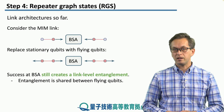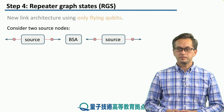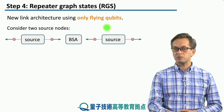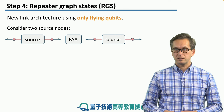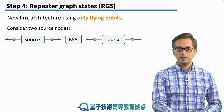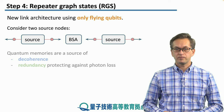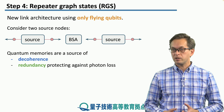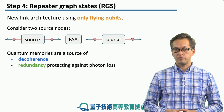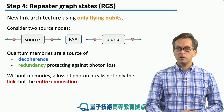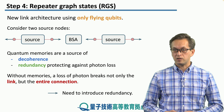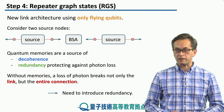This is the main idea behind the Repeater Graph States architecture. It works like this: we have a source, then a measurement node in the form of a BSA, and then another source. The sources produce entangled photon pairs. The photons travel towards the BSA where we attempt the state measurement, and if we succeed, then the outflying photons on these sides are entangled. By removing the quantum memories, we're removing a big source of decoherence. But at the same time, we're also removing a big source of redundancy that was protecting us against photon loss. Now, if we lose a single photon, we're not only breaking the link — we're breaking the entire connection and have to start over.